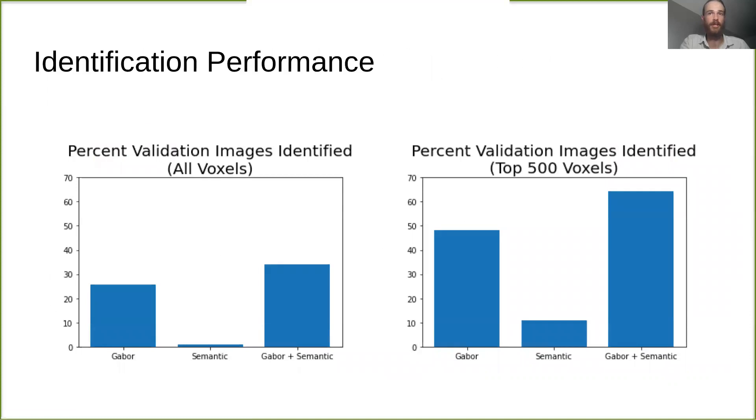Here we have bar plots of the percent of images that were correctly identified for each of our models. As you can see, our best model, which used both Gabor and semantic features, was able to correctly identify the original stimulus over 64% of the time, suggesting this model has a robust ability to infer stimulus identity from brain activity.